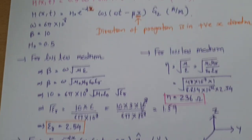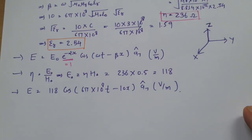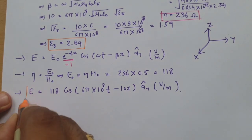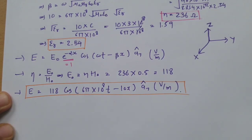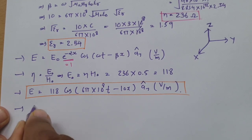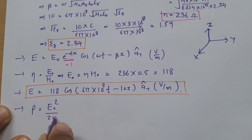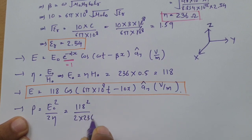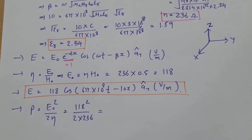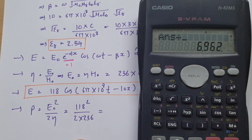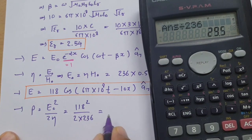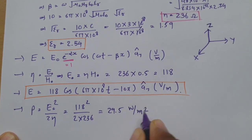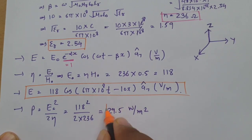The last question is average power density, calculated using Poynting's theorem. For a lossless medium, average power density = E₀² / (2η) = 118² / (2 × 236) = 13924 / 472 = 29.5 watts per meter squared. So 29.5 W/m² is the average power density — this is our fourth answer.